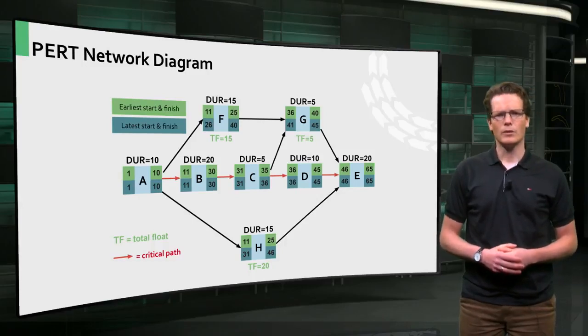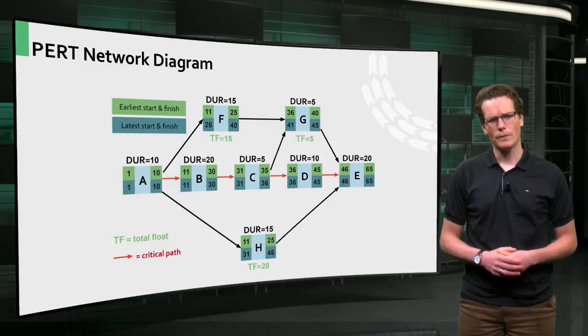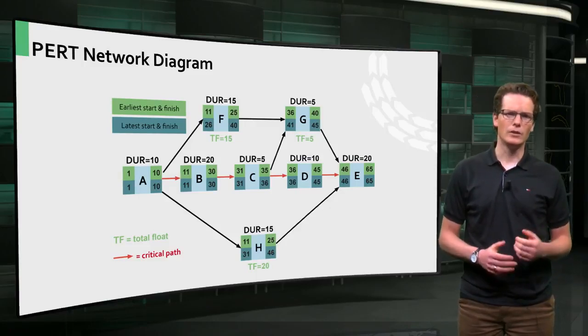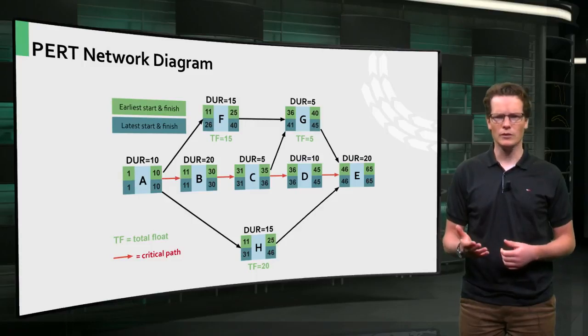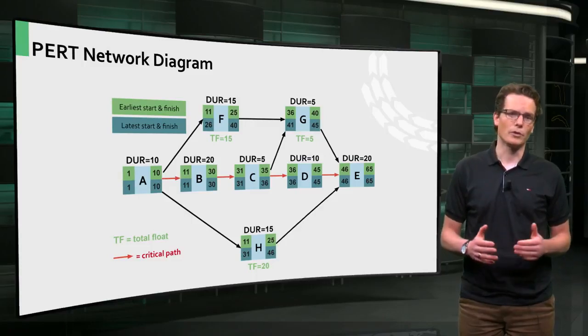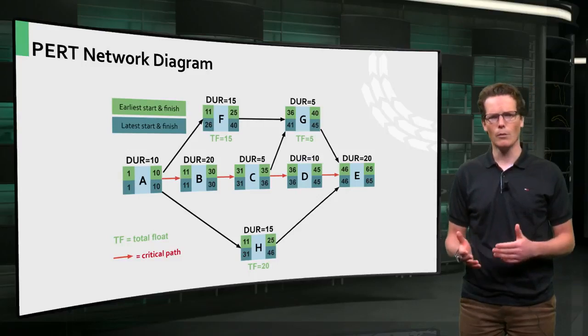Each arrow indicates the precedence relationship between two tasks. In the diagram you can see, for instance, that task B needs to be completed before task C can start. One must first construct the frame of a house before the roof can go on.